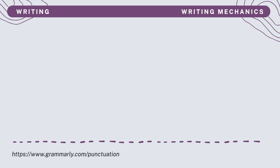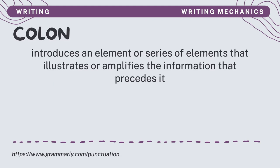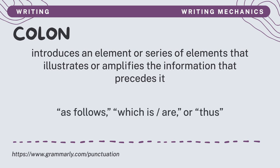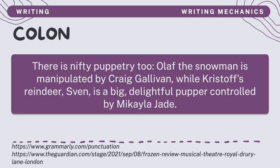The sixth punctuation we will discuss is the colon. A colon introduces an element or series of elements that illustrates or amplifies the information that precedes it. When a colon appears in a sentence, it usually gives the silent impression of 'as follows,' 'which is,' 'which are,' or 'thus.' For example: 'There is nifty puppetry too: Olaf the snowman is manipulated by Craig Gullivan, while Kristoff's reindeer Sven is a big delightful puppet controlled by Michaela Jade.' In this sentence, the colon introduces an example.